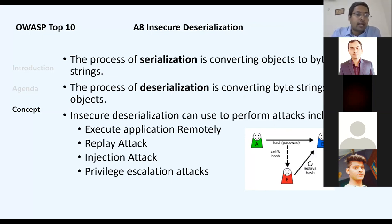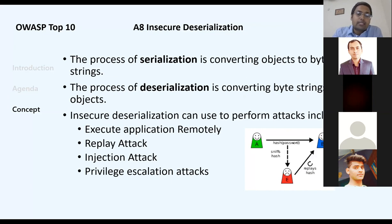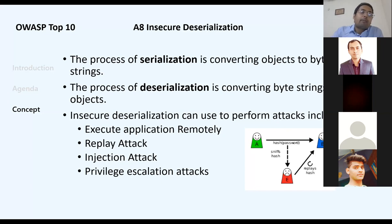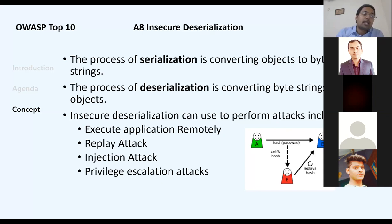The eighth category is Insecure Deserialization. Serialization is processing data in order (1, 2, 3, 4, 5); deserialization processes in a different order (1, 5, 4). Here, person A sends data to person B, but person E intercepts it and claims to be A. B then replies to E instead of A, giving the wrong person a response — this is a man-in-the-middle attack. Injection attacks can also occur this way, with E sending incorrect queries to server B.